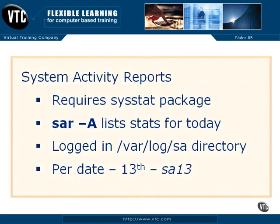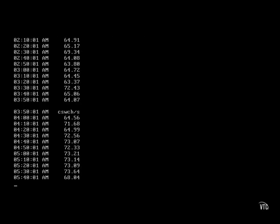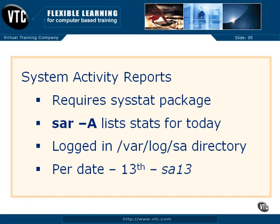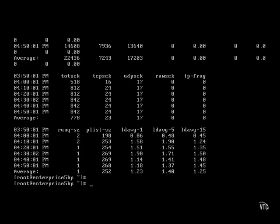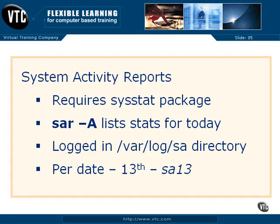There's also system activity reports, which requires the sysstat package, something which isn't installed by default. The sar command lists system activity reports stored in the /var/log/sa directory, and the numbers are associated with the date. For example, if you're looking for the system activity report for the last month on the 13th, you're looking for the SA13 file in that directory.